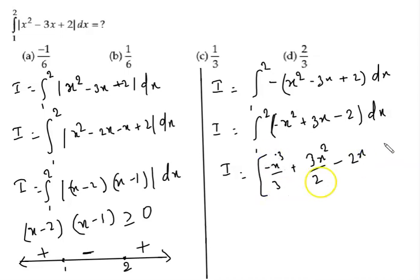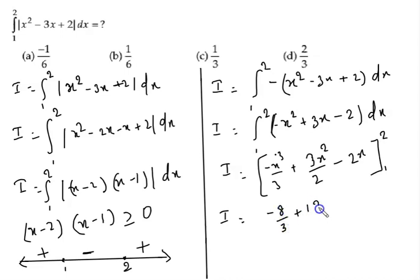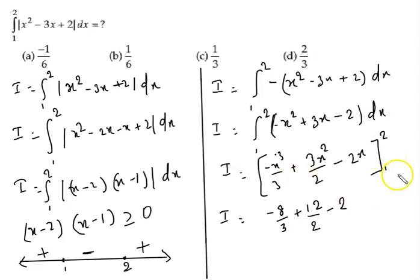Now I am going to put in the limits. For the upper limit x = 2: we get -8/3 + 3(4)/2 - 2(2), which gives -8/3 + 12/2 - 4. For the lower limit x = 1: we get -1/3 + 3/2 - 2. We then subtract the lower limit value from the upper limit value.